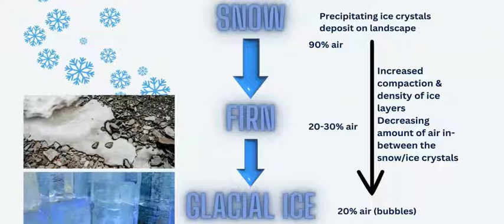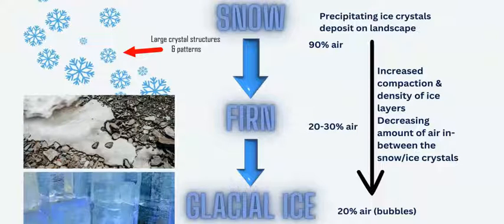This burial sequence eventually changes that snow into glacial ice. First, the snow is about 90% air — it's very fluffy, mostly air — and the snow and ice crystals are large and beautiful patterns that are very spread out. When it gets buried, compaction increases and density increases.